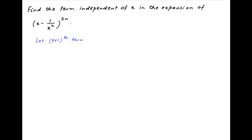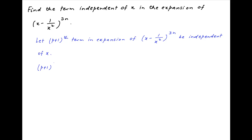Let the (p+1)th term in the expansion of the given expression (x minus 1 upon x squared) raised to the power 3n be independent of x. The (p+1)th term is equal to 3n choose p, multiplied by x raised to the power 3n minus p, multiplied by minus 1 upon x squared raised to the power p.